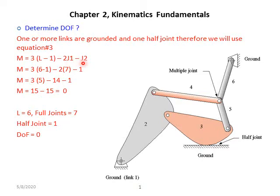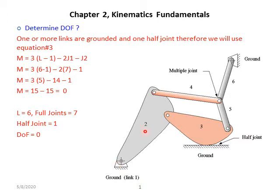In equation 3, j1 represents full joints and j2 represents half joints. We need to count the number of links l, full joints j1, and half joints j2. For the ground or fixed links: if there are more than one, we count all of them as a single link. In this case there are three ground links, so we count them as one. The total number of links is six.